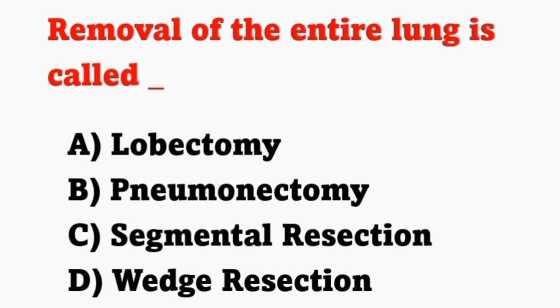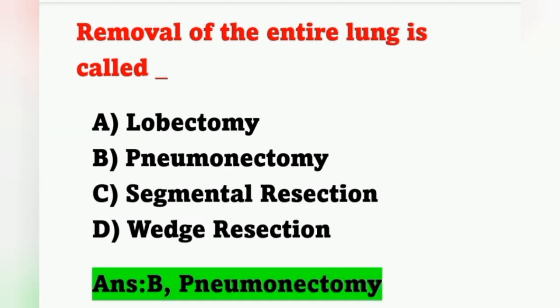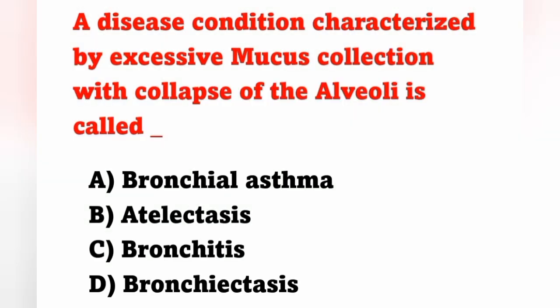We can see questions from the respiratory system. First question: a removal of the entire lung is called — option A lobectomy, option B pneumonectomy, option C segmental resection, option D wedge resection. A removal of the entire lung is known as pneumonectomy. Option B is the correct answer.